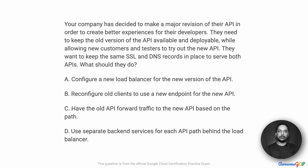In this project scenario, your company has decided to make a major revision of the API in order to create better experiences for their developers. They need to keep the old version of the API available and deployable while allowing new customers and testers to try out the new API. They want to keep the same SSL and DNS records in place to serve both APIs. What should they do?